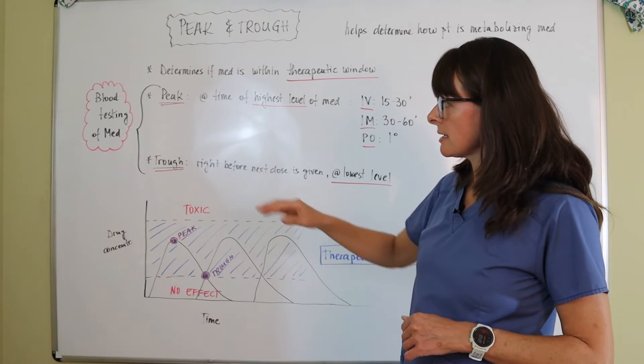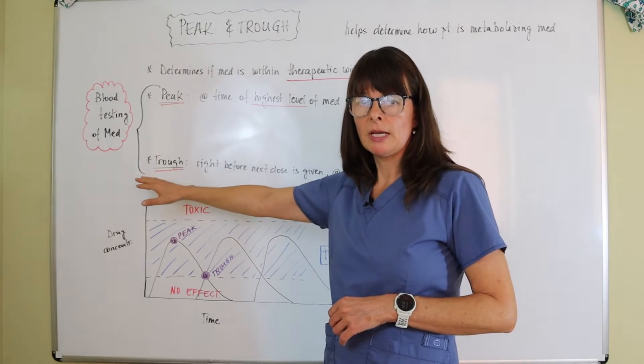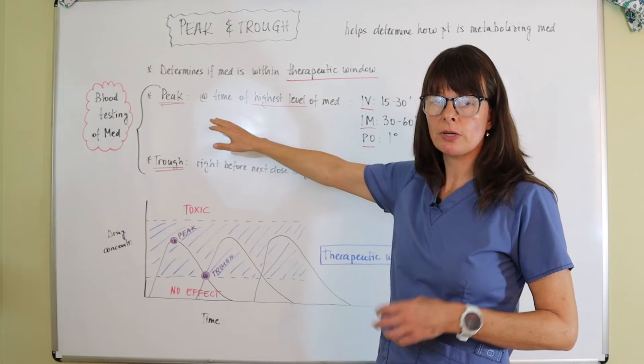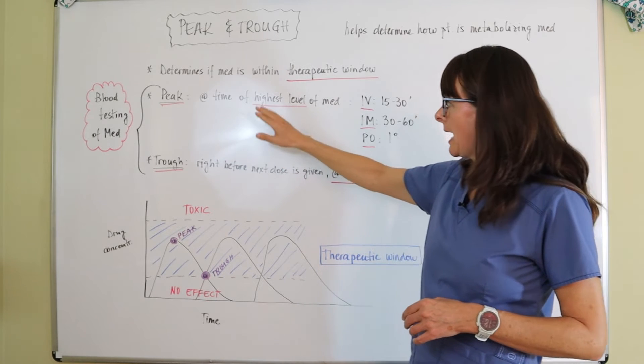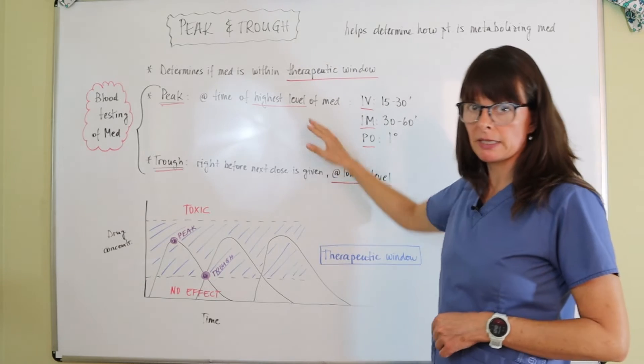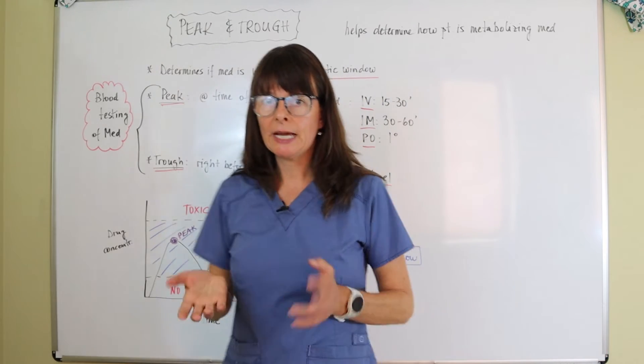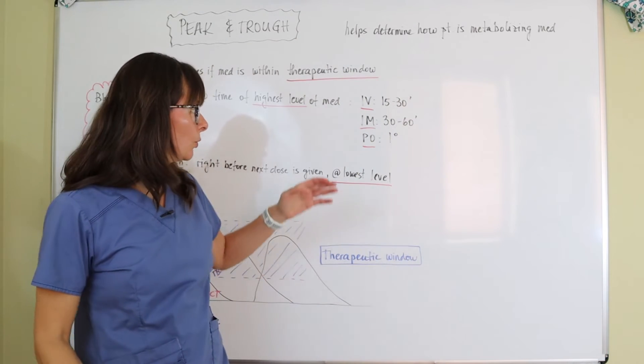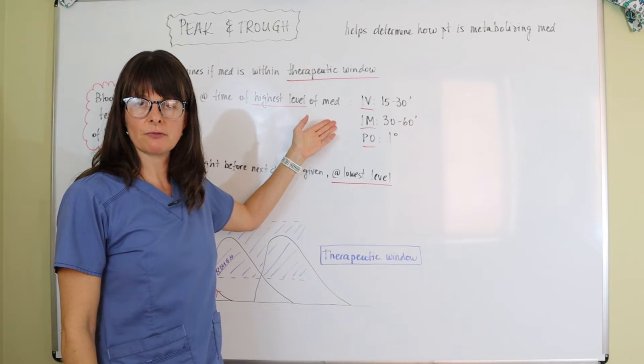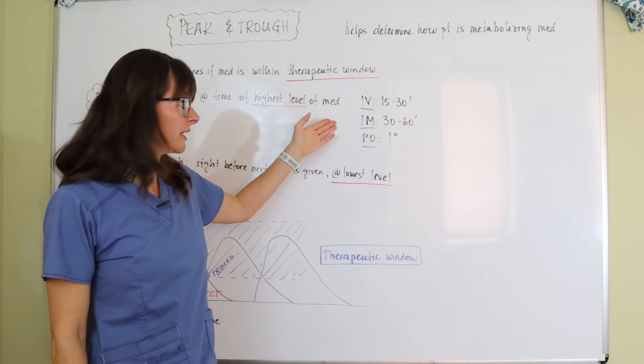And peak and trough is blood testing of the medication in the patient's body, peak meaning that we are measuring the drug concentration at the time of the highest level of the medication in the patient's bloodstream.